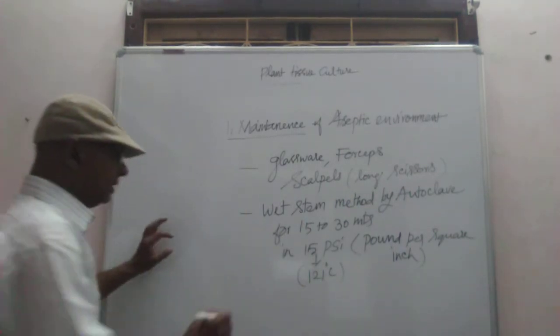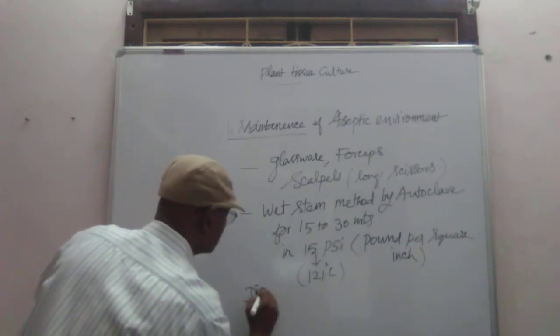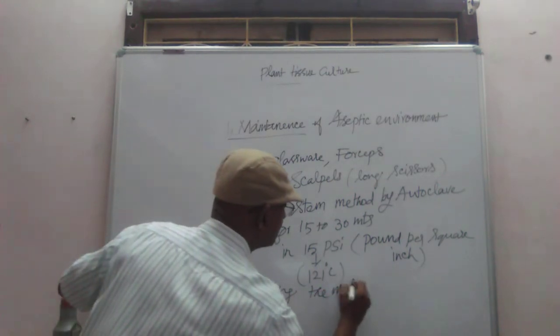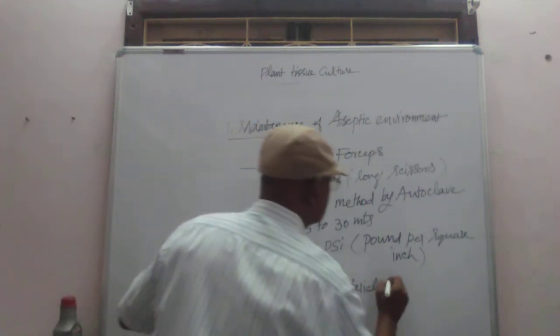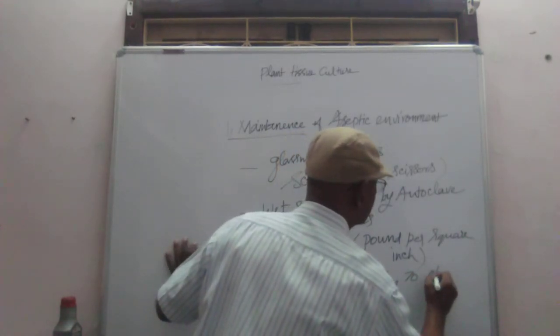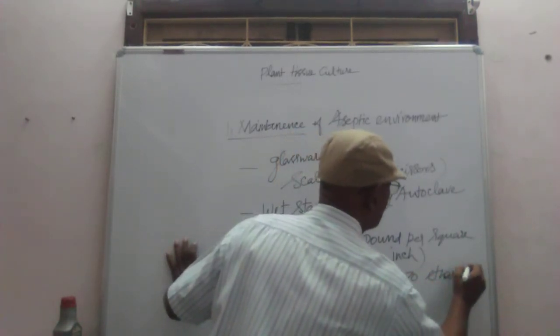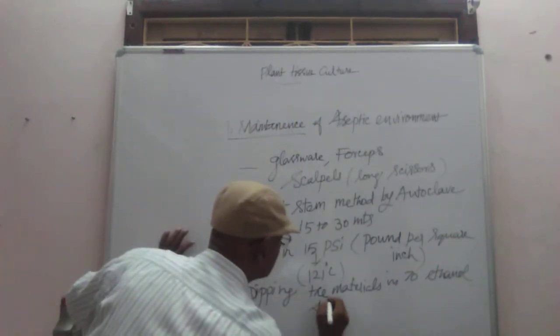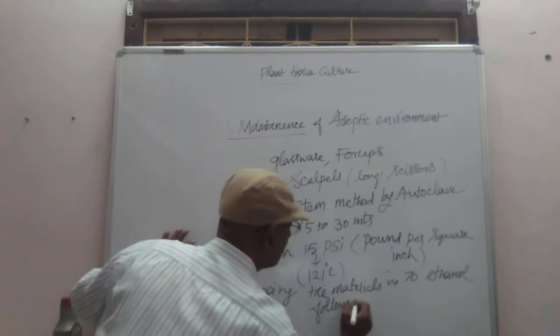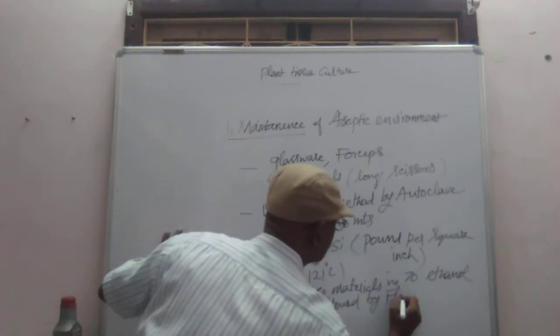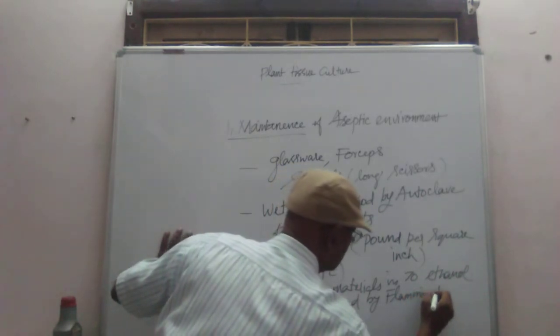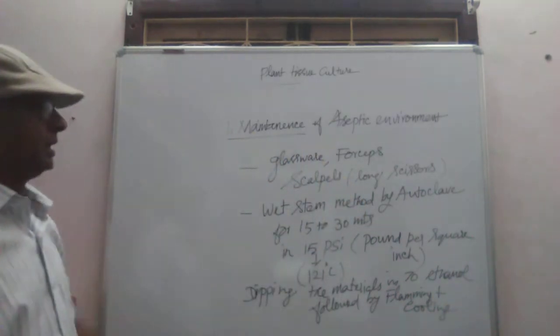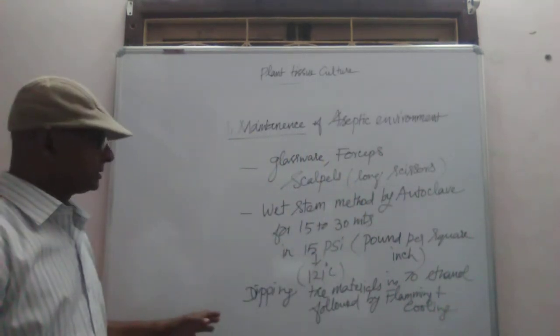Finally, dipping the materials in 70% ethanol. By using 70% ethanol, followed by flaming and cooling, the material should be cleanly sterilized.